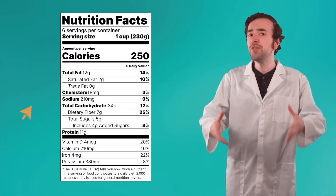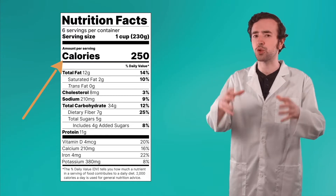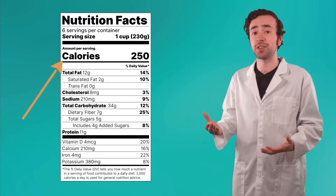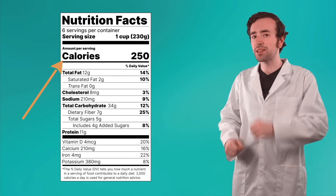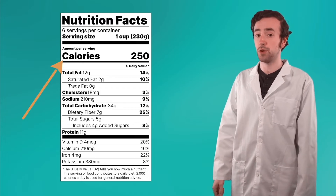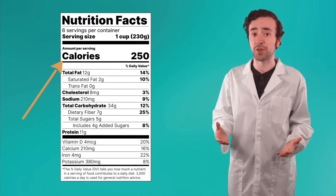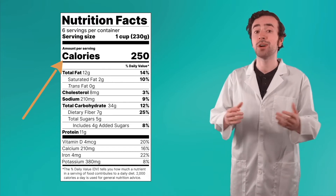Energy exists in many different forms. The light and heat we feel from the sun is energy. The electricity powering the device that you're using to watch this video is energy. Even the food we eat has stored energy in it. The calories on a nutrition label will actually tell you what the amount of energy is in that food. Even though all these things are very different, they are all forms of energy.